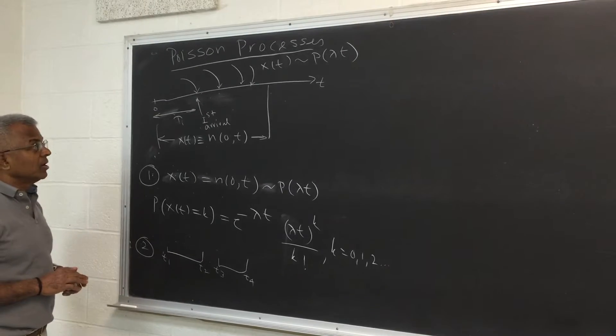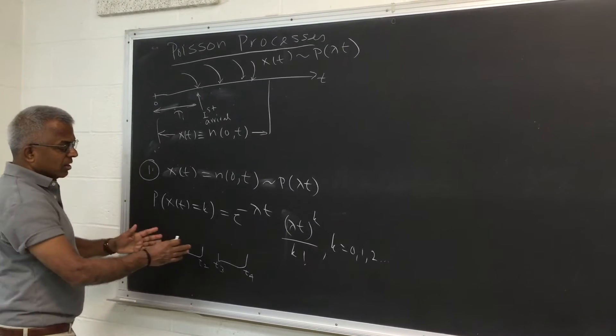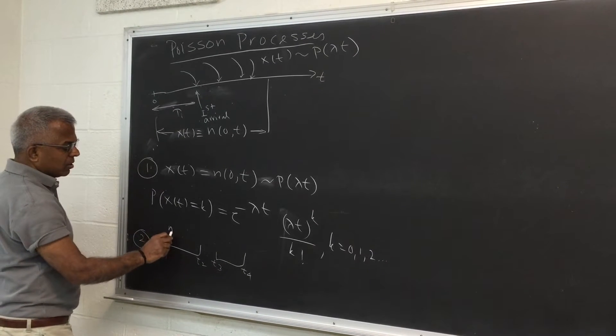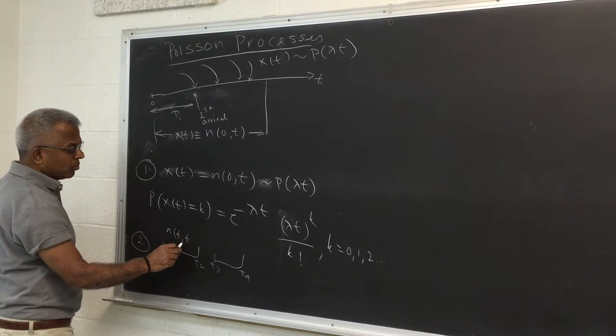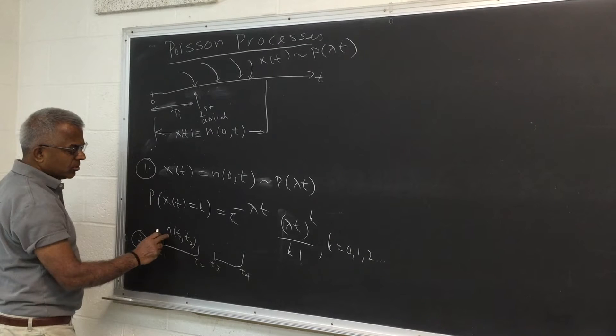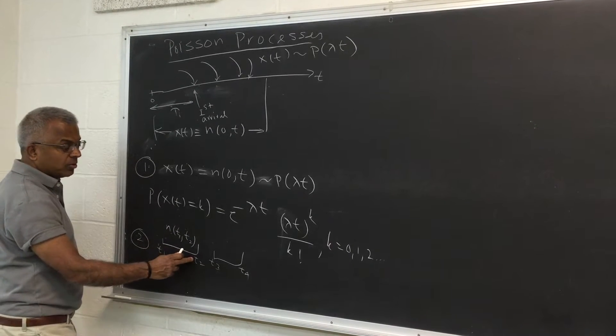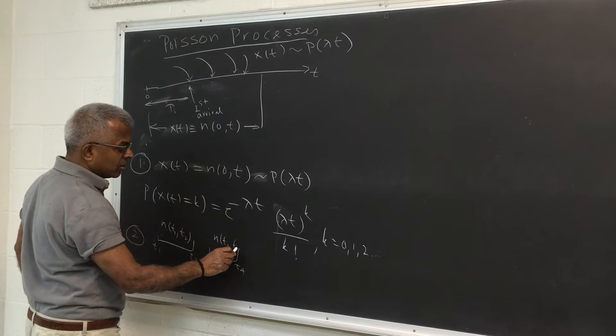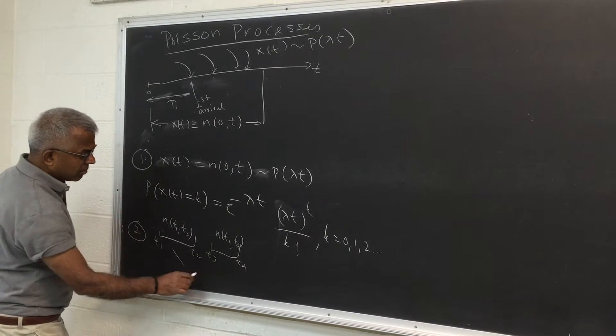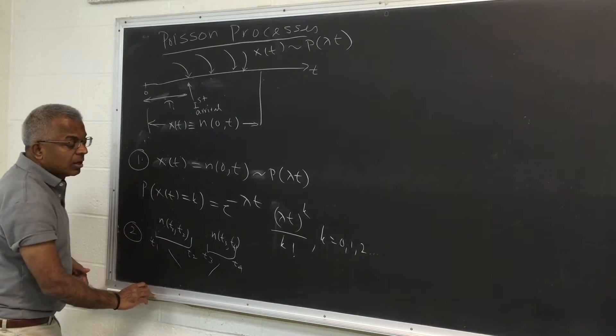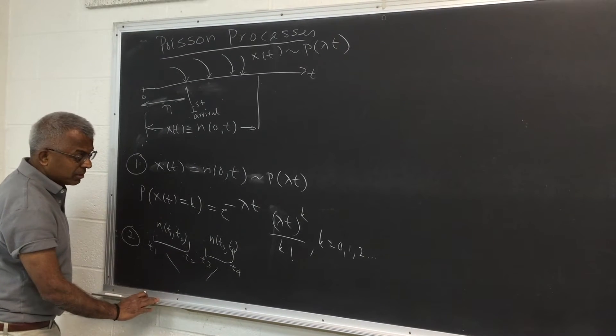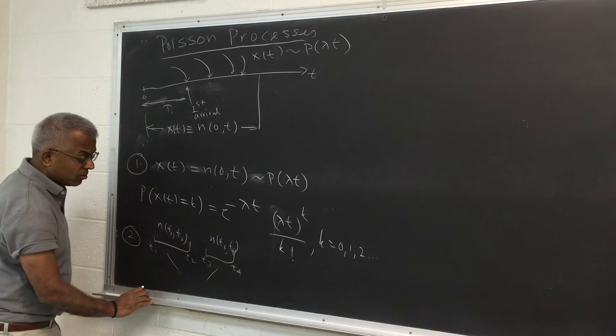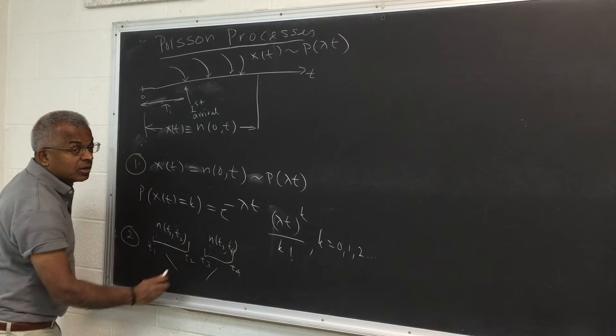Then the second condition is that things are over non-overlapping intervals. So this is the number of arrivals in t1 to t2. This is the arrivals in t3 and t4. And you can see clearly the way I have drawn they are non-overlapping because t3 is greater than t2. These random variables are independent.